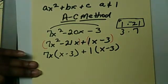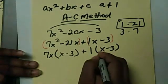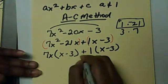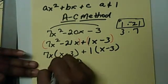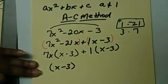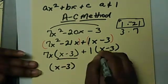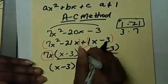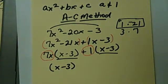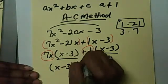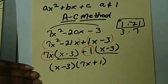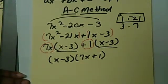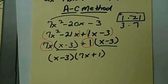Our final step is to write down our final answer. These two x minus 3s we're going to write as 1, so x minus 3. And the stuff that we would have left over, which is going to be this 7x plus 1, so we're going to write that in a parenthesis, 7x plus 1. And that is going to be the answer using the AC method.